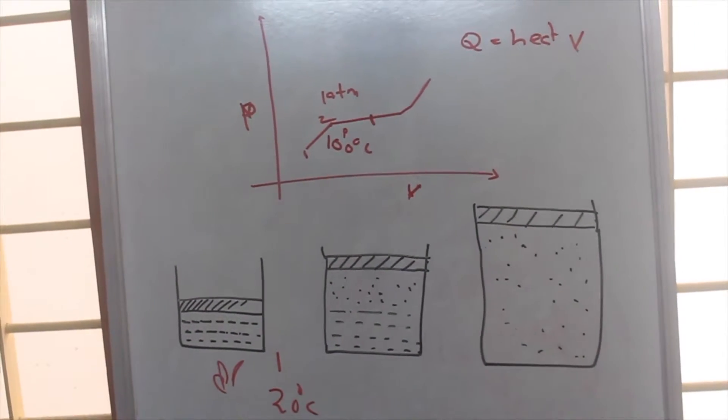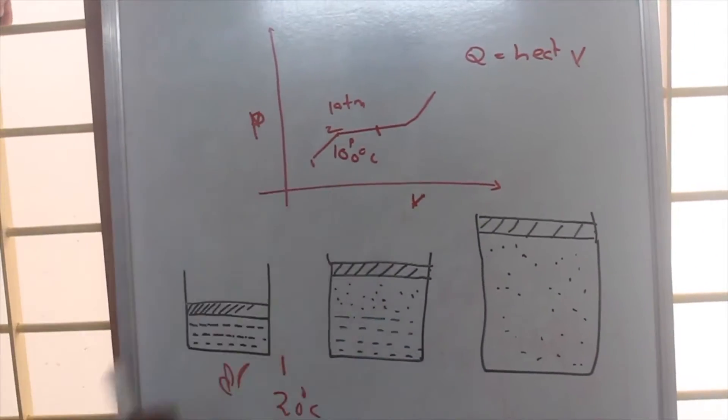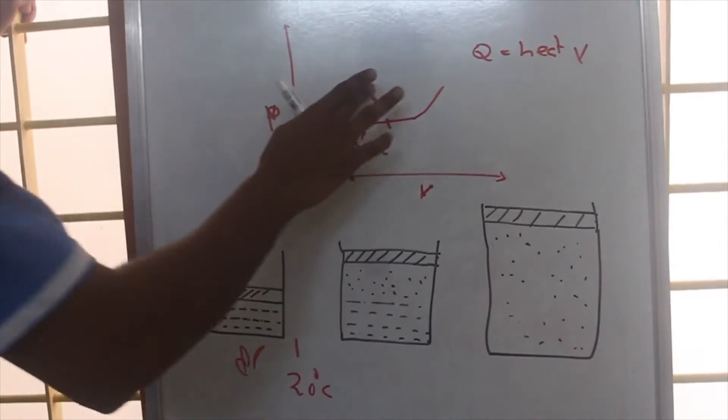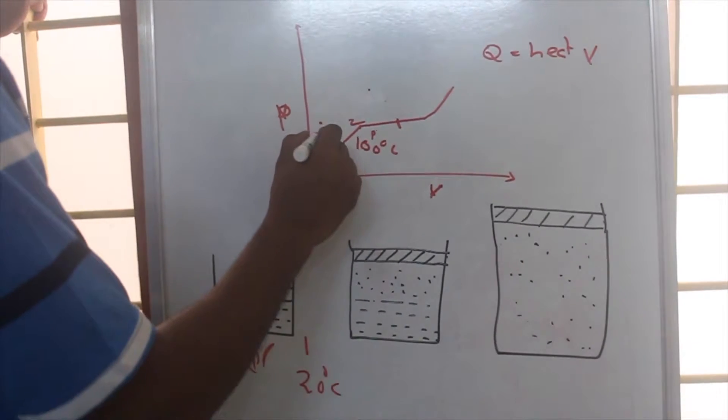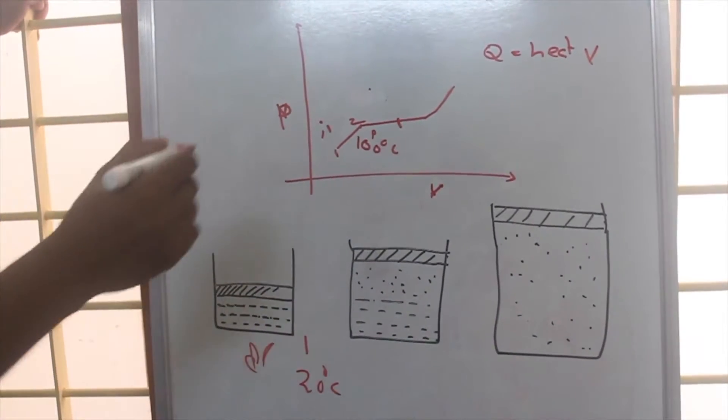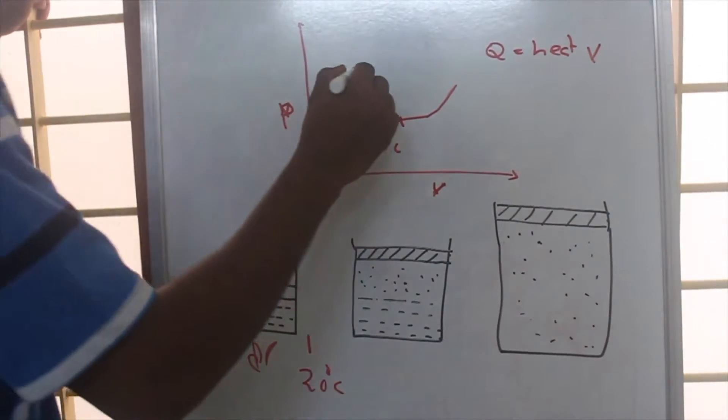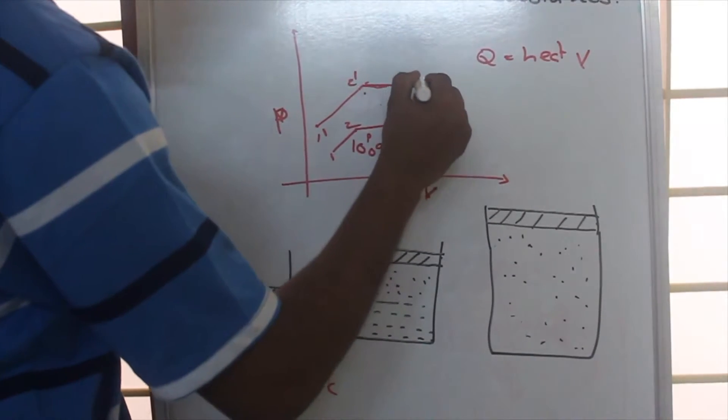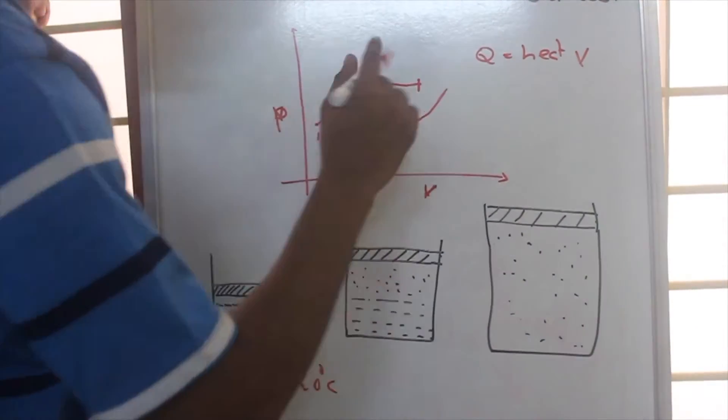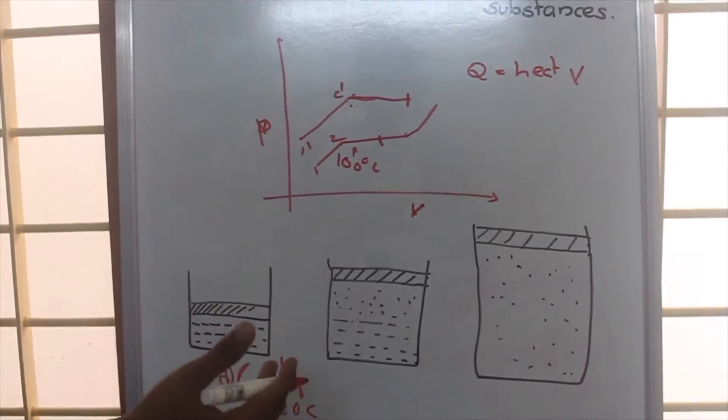The thing to be noted is at one atmosphere, the temperature remains 100 degrees Celsius. Suppose if the state was at one dash, then on heating it will reach point two dash. After two dash there will be vaporization, and at this particular point vaporization will come to end, that is the entire water will be changing into vapor.